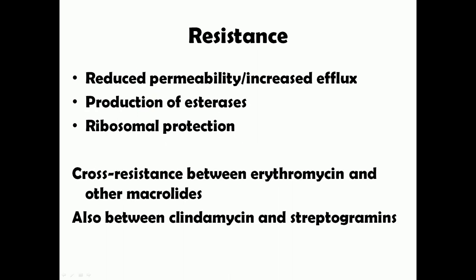Now let's see about the resistance to erythromycin. There are three main mechanisms by which bacteria can exhibit resistance. The first mechanism is by reduced permeability or increased efflux — bacteria either prevent macrolides from entering, or develop efflux pumps to pump macrolides out. The second mechanism is by production of esterases, which is very common in the bacterial family Enterobacteriaceae. The third mechanism is ribosomal protection, by production of methylases and other enzymes, protecting bacterial ribosomes from macrolides.